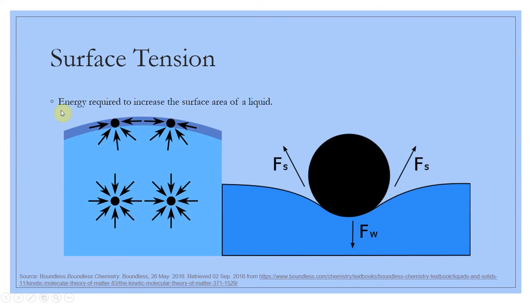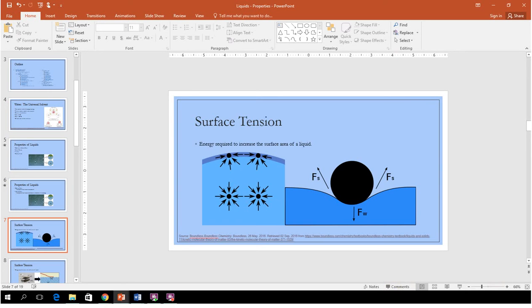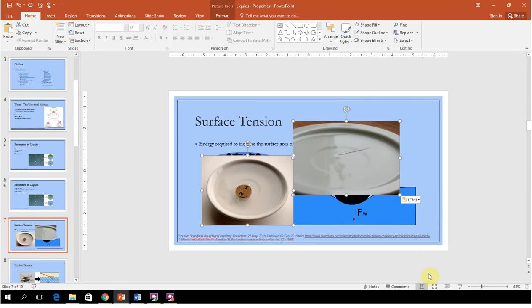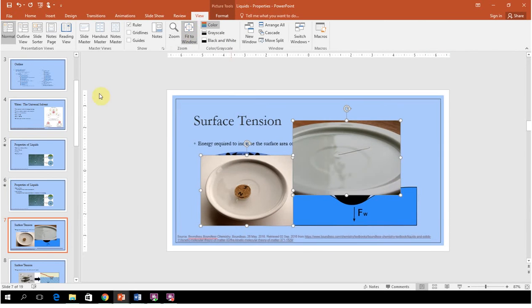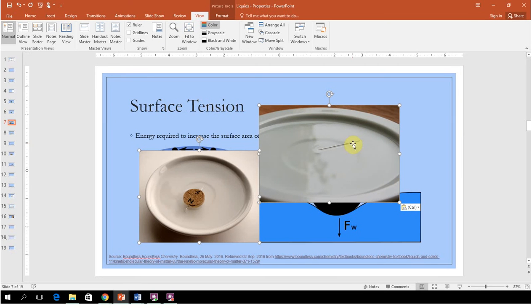We can look at two things that happen with water. There have been more than a few instances where you can add something like a needle to water and it will float. That's useful — the old adage that you can make a makeshift compass. A needle can float on water because of the surface tension. The intermolecular forces will let water hold together and will not break under the weight of the needle. You can kind of see a little bend in the water surface, but the water will not break and let the needle fall through.